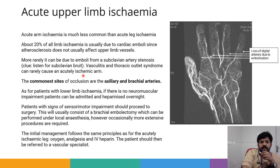Acute upper limb ischemia is much less common than acute leg ischemia. About 20% of all limb ischemia is due to cardiac emboli, since atherosclerosis does not usually affect upper limb vessels. More rarely, it can be due to emboli from subclavian atherosclerosis — look for a subclavian bruit — or vasculitis and thoracic outlet syndrome. The commonest sites of occlusion are the axillary and brachial arteries. Patients with no neuromuscular impairment can be admitted and heparinized overnight; those with sensory-motor impairment should proceed to surgery, usually brachial embolectomy under local anesthesia. Initial management follows the same principles: oxygen, analgesia, heparin, and vascular specialist referral.